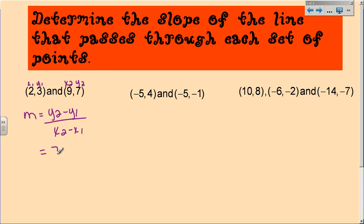Well, Y2 is 7, Y1 is 3, X2 is 9, and X1 is 2. And so now I just subtract, 7 minus 3 is 4, 9 minus 2 is 7, and so the slope of that line is 4 over 7. So to get from this point to this point, I would go up 4 and over 7. It means it's positive, so it's an increasing line.